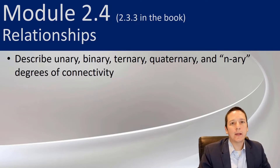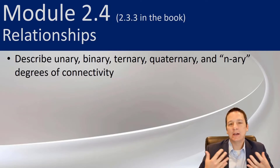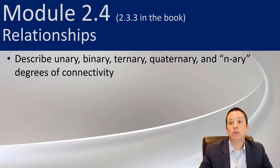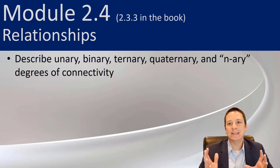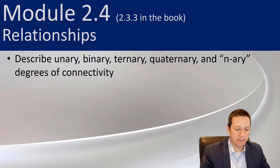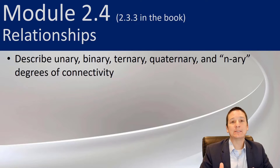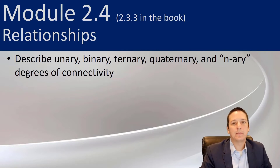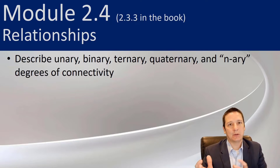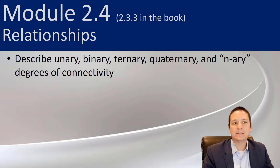In 2.4, we're going to be talking about this idea of the degree of connectivity of our relationships. We're going to talk about unary, binary, ternary, quaternary, and more generically n-ary degrees of connectivity. This is going to seem pretty straightforward at this point — almost a little silly that we're even talking about it — but this is going to come back up in a couple of lectures and click into some other concepts, so keep that in the back of your head.